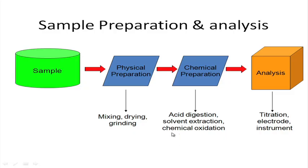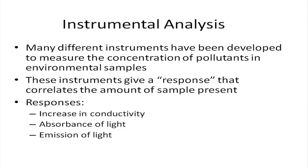Another method is chemical oxidation. Acid digestion is actually a form of chemical oxidation. The COD test, for example, is essentially a chemical oxidation test — it uses potassium dichromate as an oxidizing agent, which oxidizes every chemical present that could potentially be oxidized. Once you complete physical and chemical preparation, you take the sample to analysis — titration, electrode, or instruments — and get the sample concentration in mg/L, µg/L, or mg/kg depending on the matrix.